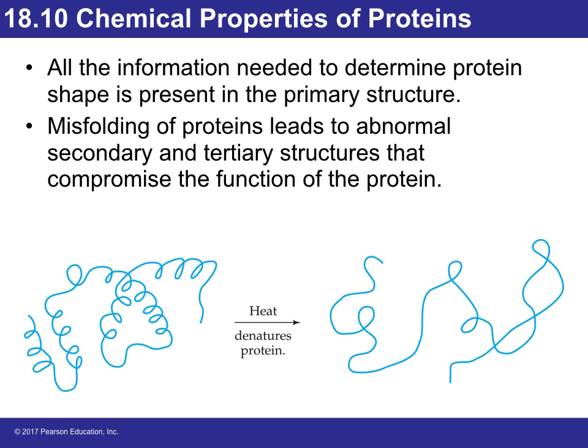Looking at the different structures — primary, secondary, tertiary, and quaternary — remember that denaturation does not change the primary structure. However, misfolding of proteins leads to abnormal secondary and tertiary structure, which compromises the function of the protein. Instead of being well organized, a denatured protein will be very loose and not able to properly function.